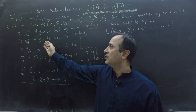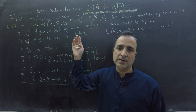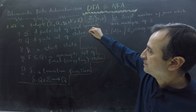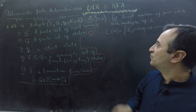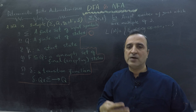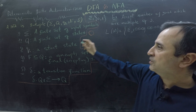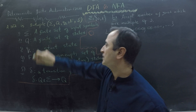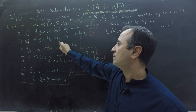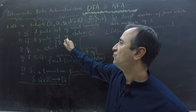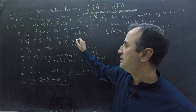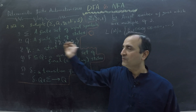Q is a finite set of states. Graphically, a state is represented by a circle. For this example, I will have three states. Our set Q in this case has three states: Q0, Q1, and Q2. These are the states of our DFA for this example.